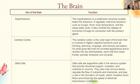The hypothalamus is a small brain structure located below the thalamus that regulates vital body functions such as hunger, thirst, body temperature, and the sleep-wake cycle. It also controls the release of hormones through its connection with the pituitary gland. The cerebral cortex is the outer layer of the brain involved in higher cognitive functions such as thinking, planning, language, and sensory perception. It gives the brain its wrinkled appearance and is divided into two hemispheres, each with four lobes: frontal, parietal, temporal, and occipital.